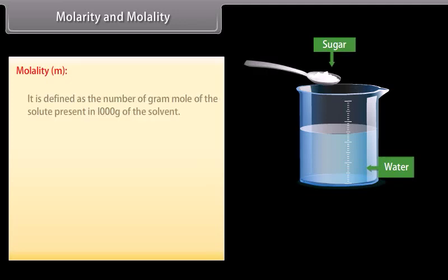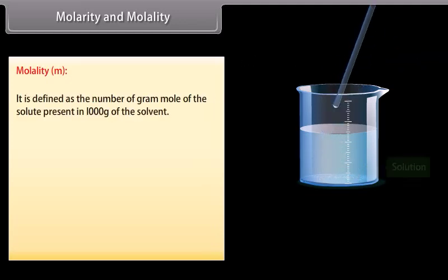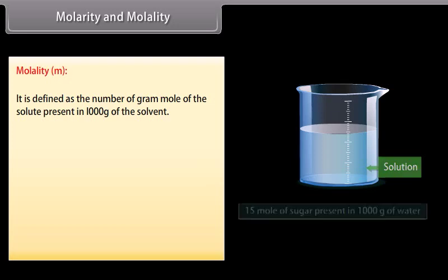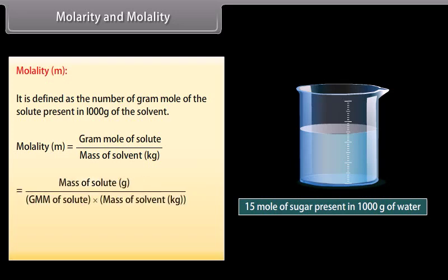Molality is defined as the number of gram moles of the solute present in one thousand grams of the solvent. It is represented by small m. Mathematically, m = W_B (in grams) / (gram mole mass of B × W_A in kilograms). A solution containing one mole of solute per one thousand grams of solvent has molality equal to one and is called a molal solution.